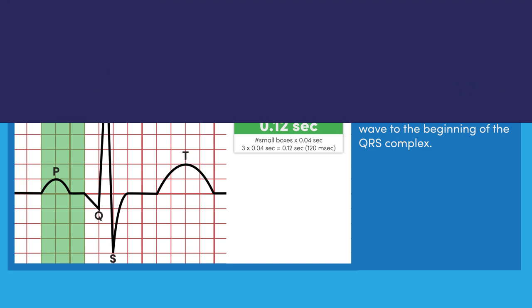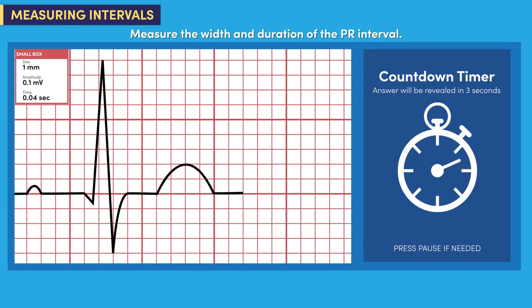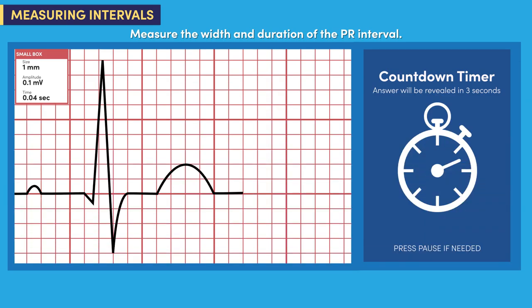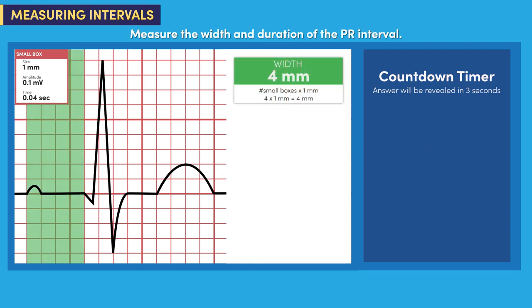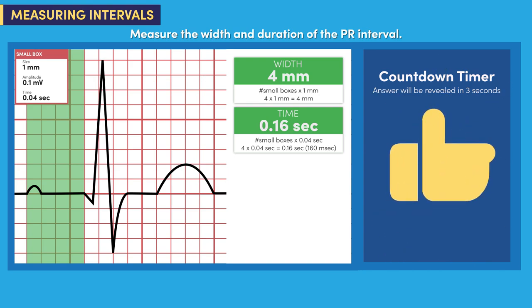Now you try it. Measure the width and duration of this PR interval. The width of the PR interval is four millimeters. The duration of the PR interval is 0.16 seconds or 160 milliseconds. Did you answer correctly? Nice job.